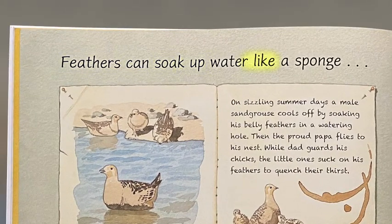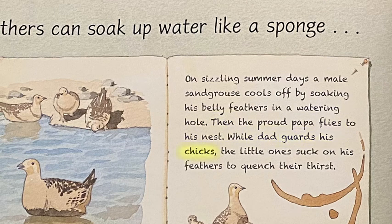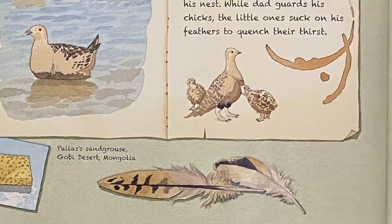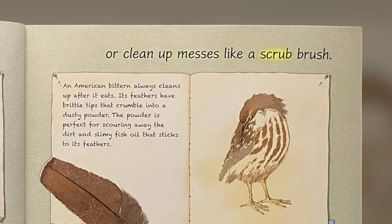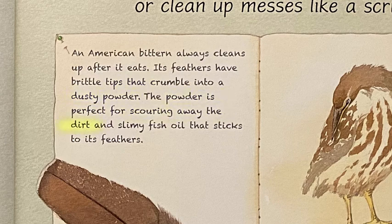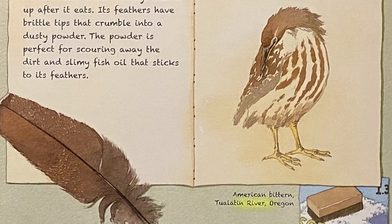Feathers can soak up water like a sponge. On sizzling summer days, a male sand-grouse cools off by soaking his belly feathers in a watering hole. Then the proud papa flies to his nest. While dad guards his chicks, the little ones suck on his feathers to quench their thirst. Or clean up messes like a scrub brush. An American bittern always cleans up after it eats. Its feathers have brittle tips that crumble into a dusty powder — perfect for scouring away dirt and slimy fish oil that sticks to its feathers.